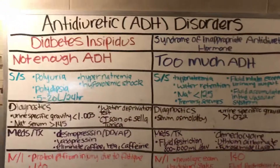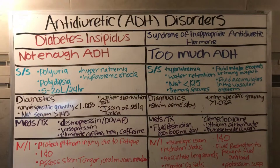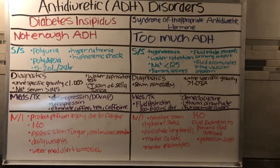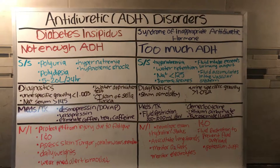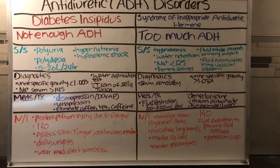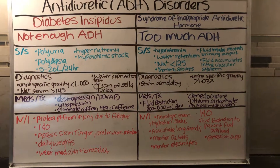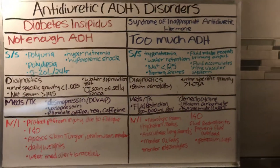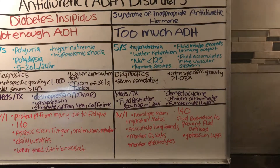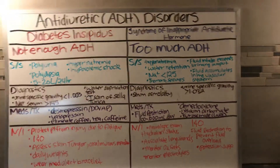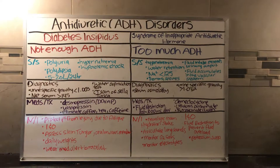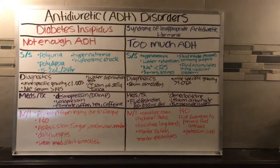As you can see with ADH, you have not enough ADH and you have too much ADH. If you can remember one or the other, you know it's going to be the opposite. Diabetes insipidus — they're losing everything. With syndrome of inappropriate, they're retaining everything. Take a minute to look at that. Those are your antidiuretic hormone disorders.